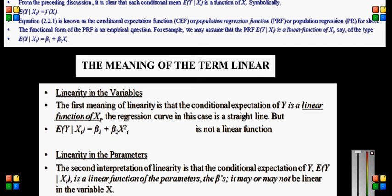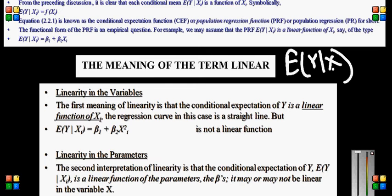From the preceding discussion it is clear about the meaning of E(y|x). I have explained that the function E of y given x can be precisely written as beta 1 plus beta 2 into x.